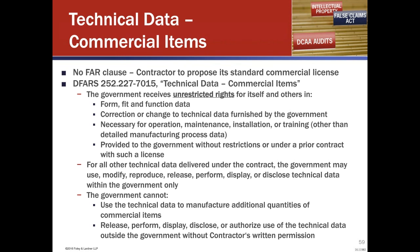Under the DFAR, there is a technical data clause for commercial items, and it says the government receives unrestricted rights in form, fit, and function data — no different than what the FAR said — correction or changes to technical data furnished by the government, information necessary for maintenance, installation, operation, or repair, or that's been provided to the government without restriction under a prior contract. This is where consistency is important. If you've already given the government unlimited rights in data, you can't come back on your next contract and say they only get limited rights. And when you give the government rights under a DOD contract for one specific agency, all of the government has that license right.